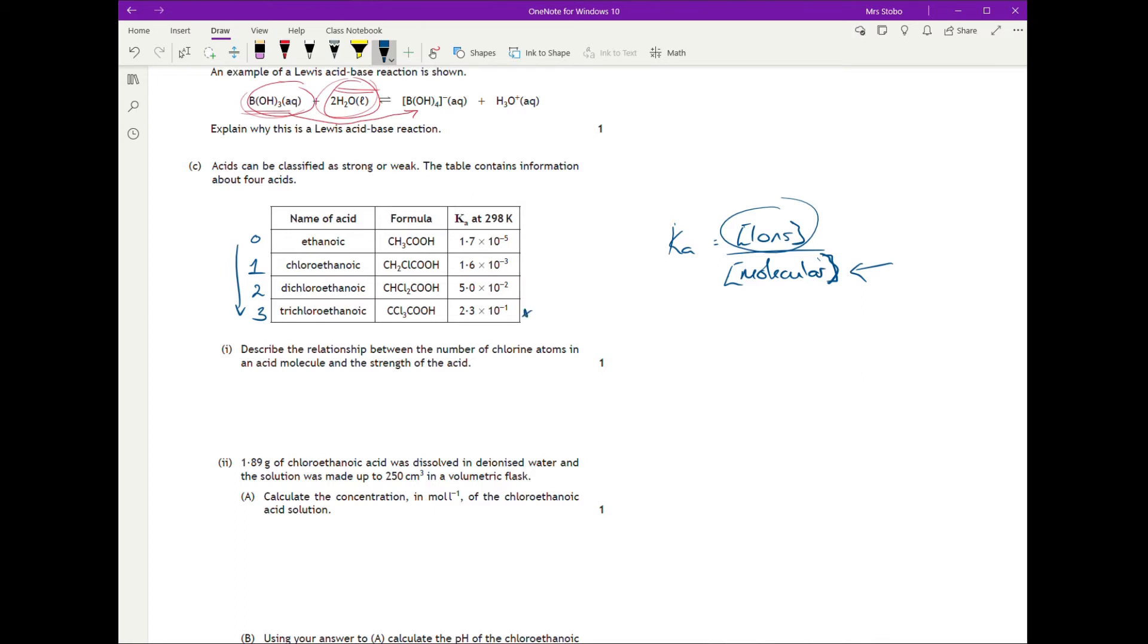So basically the bigger that your Ka gets, so the bigger that your numerator becomes, then the stronger your acid is becoming. Here is your biggest number, here is your smallest number. So as you increase the number of chlorine atoms, you increase the strength of the acid. Or you could say as you decrease the number of chlorines, you decrease the strength of the acid. But you must talk about chlorine atoms and the strength of the acid. That's what the question requires.